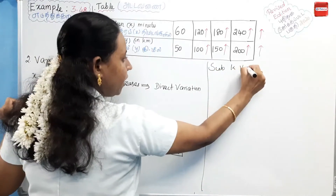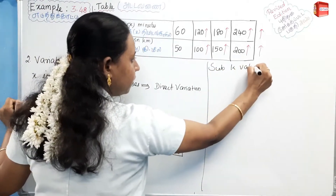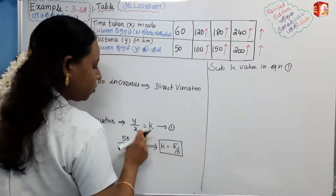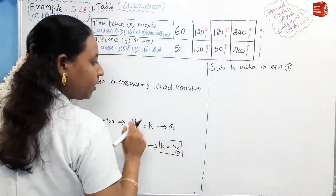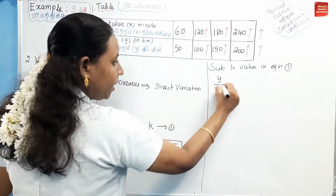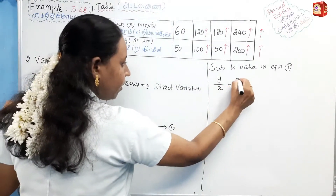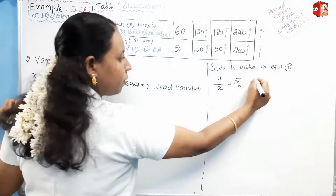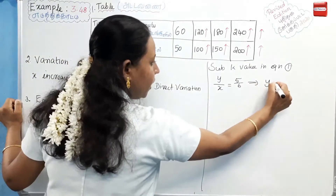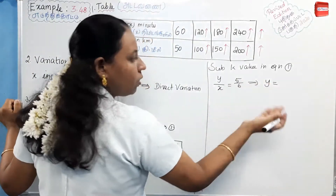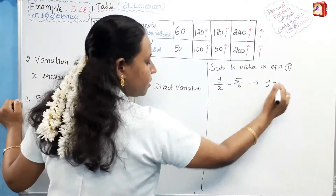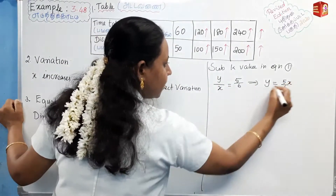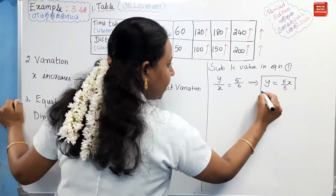Substitute the K value into equation 1. Y by X equals 5 by 6. Now we can write the equation as Y equals 5 by 6 times X.